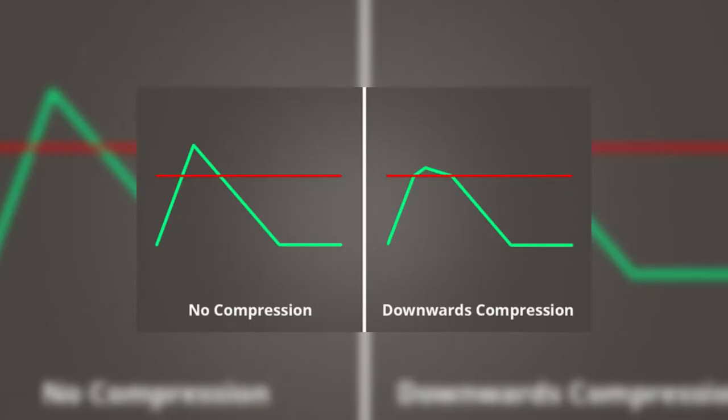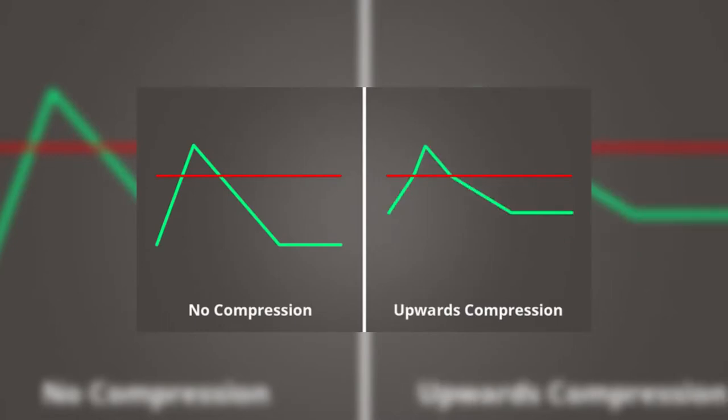There are two types of compression that determine which way it's behaving. Downward compression reduces loud sounds that are above a threshold, and upward compression boosts audio below a threshold.